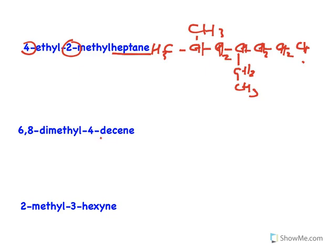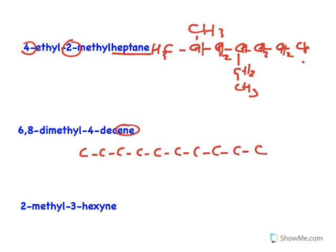Next, 6,8-dimethyl-dec-4-ene. 'Dec' means ten carbons, so we draw ten carbons numbered one through ten. The double bond is on carbon four, so we place a double bond between C4 and C5. On carbon six and carbon eight I have two methyl group substitutions — each is one carbon. Complete the remaining carbons with hydrogens; carbons in the middle take two hydrogens, and carbons on the double bond take one hydrogen each.